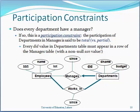You can see in the diagram that the marriage relationship exists between employees and departments as a partial participation example. Every department ID value in the departments table must appear in a row of the managers table with a non-null value. You can see employees, managers, and departments highlighted in the diagram.